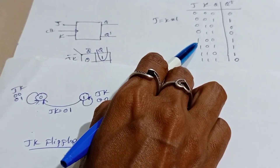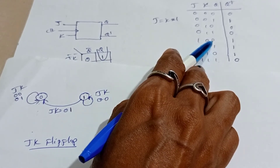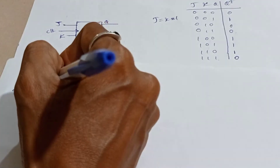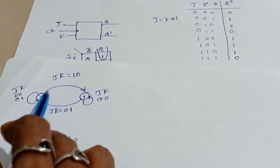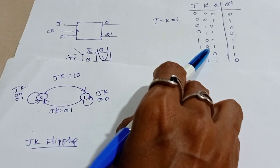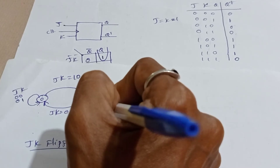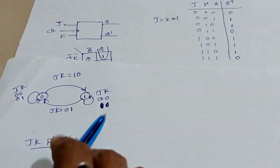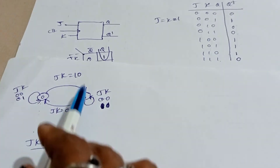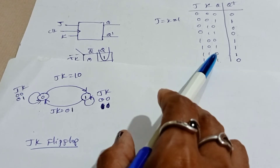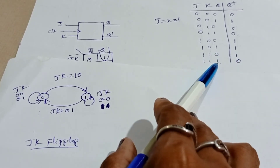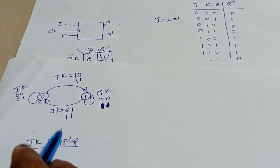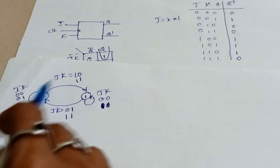When J equals 1 and K equals 0, it is changing from state 0 to state 1. When J and K are both 1, it is changing from 0 to 1. When J is 1 and K is 0, it is in the same state 1. When both J and K are 1, it is changing from 1 to 0. This is the finite state machine for JK flip-flop.